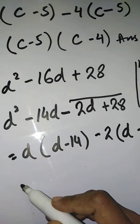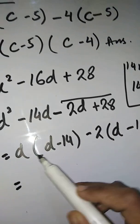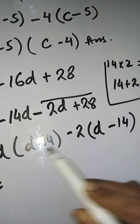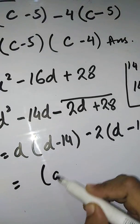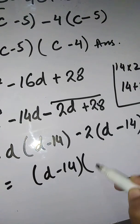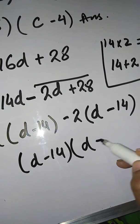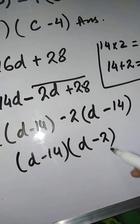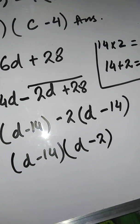Take 'd' as common from the first two terms: d² gives d, 14d gives 14 — so d(d - 14). Take -2 as common from the next two terms: -2d gives d, 28 ÷ 2 = 14 — giving -2(d - 14). Both brackets are the same. Take (d - 14) as common: d is left in the first, 2 is left in the second. The answer is (d - 14)(d - 2).